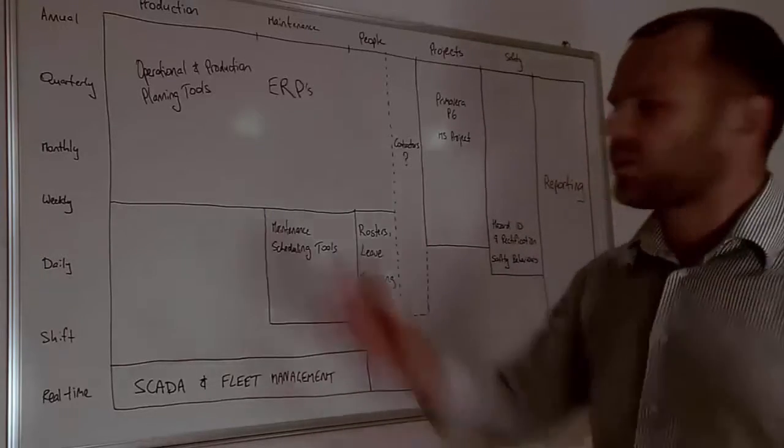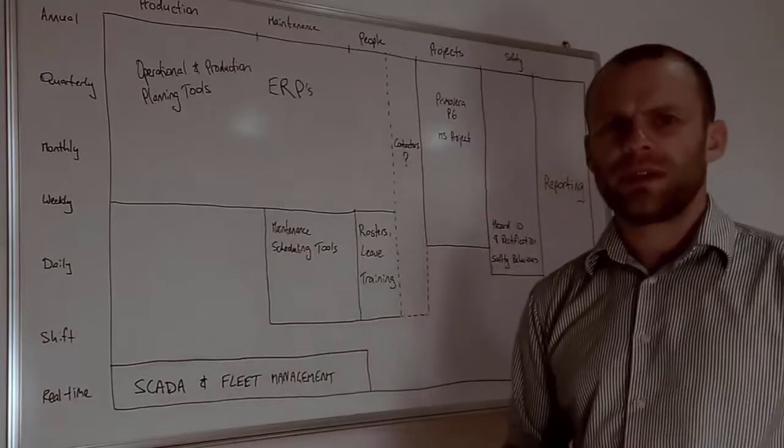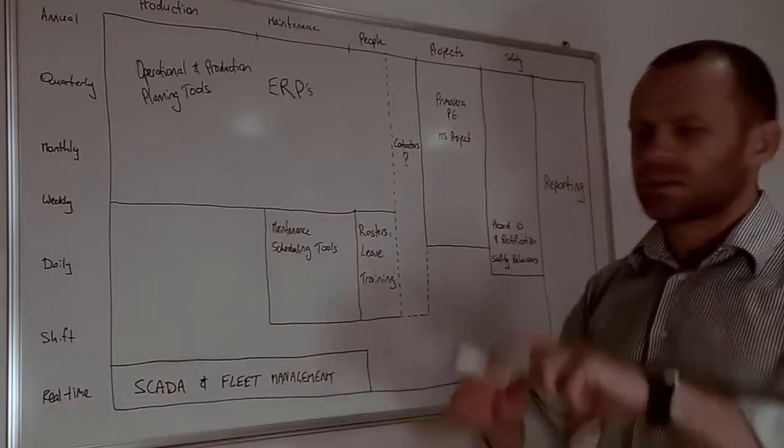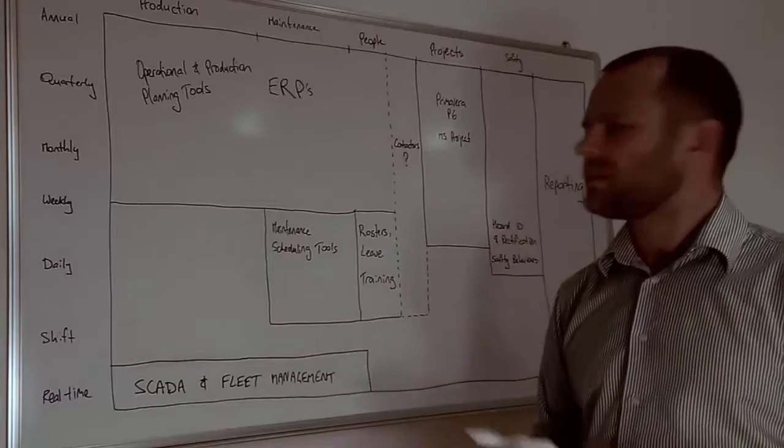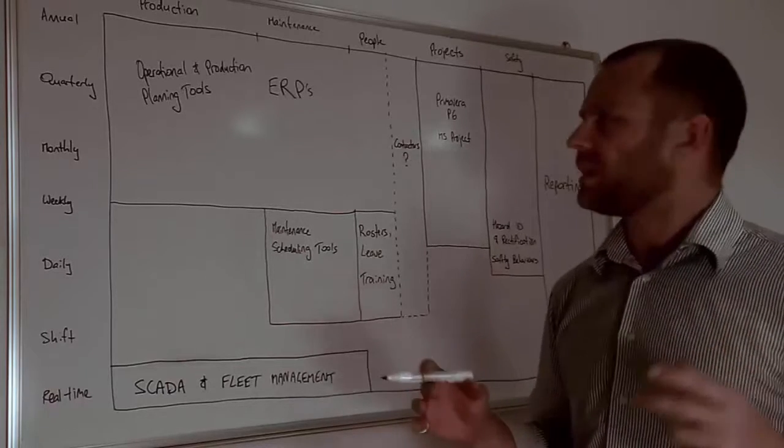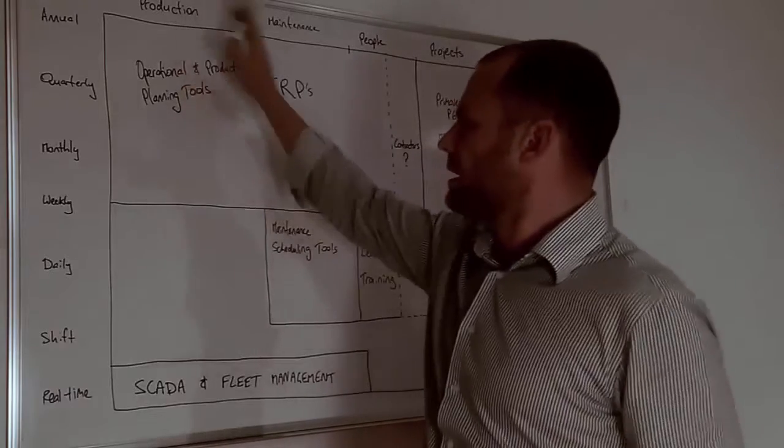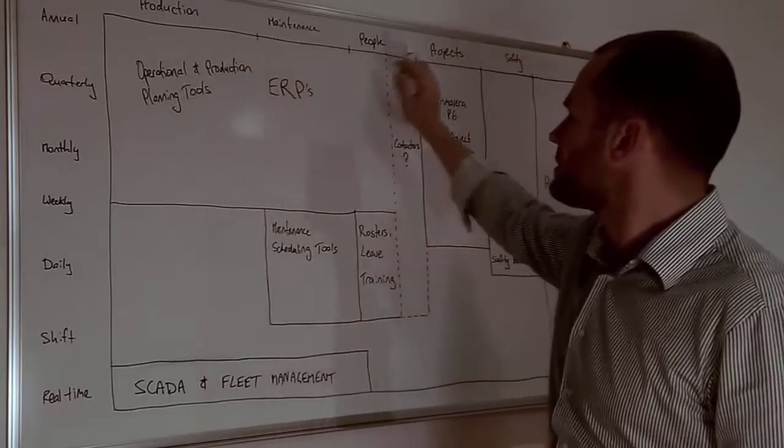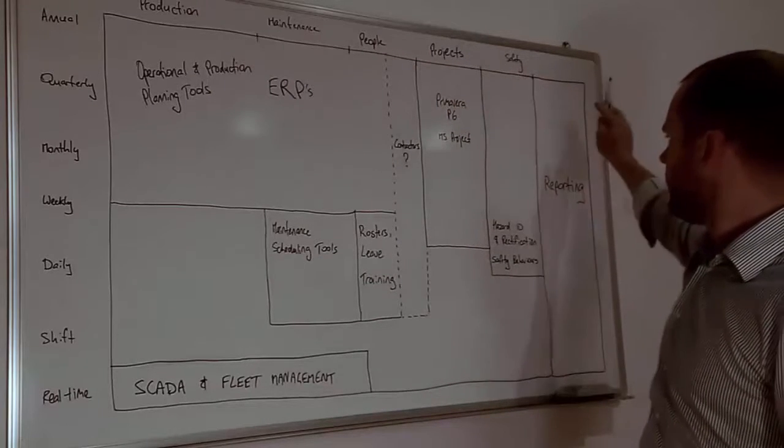Okay, so what I want to talk about today is this operational systems map that I've drawn here. I think this is useful because it describes all of the different things that happen on a site and how they fit together from a technology perspective. So we've got basically down the page production, maintenance, people, projects, safety and reporting.